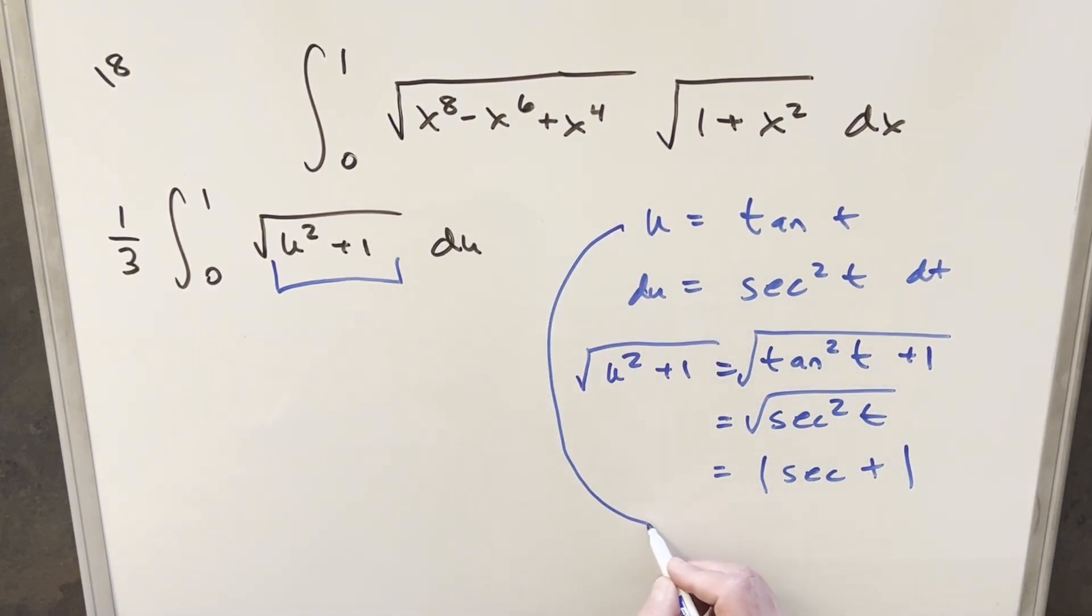But one more thing I want to do before I substitute is let's just get our value for t. Taking the arctan on both sides, this is going to become t equal to just arctan of u.